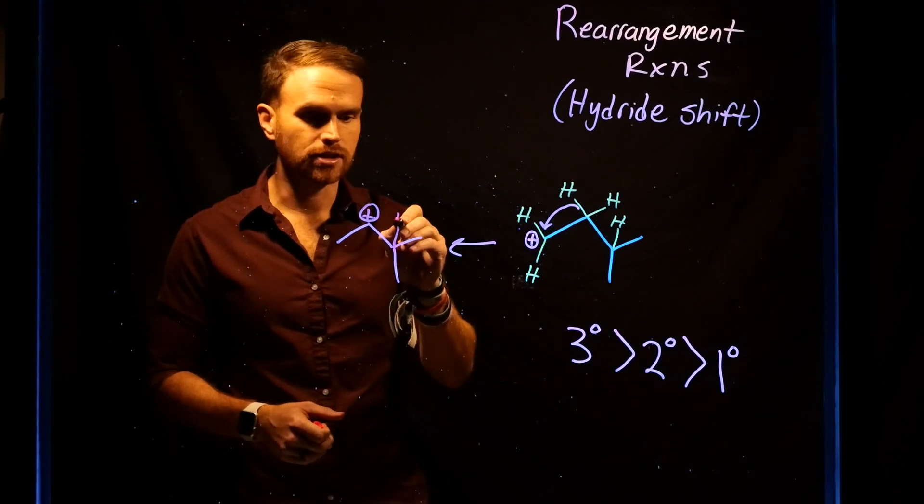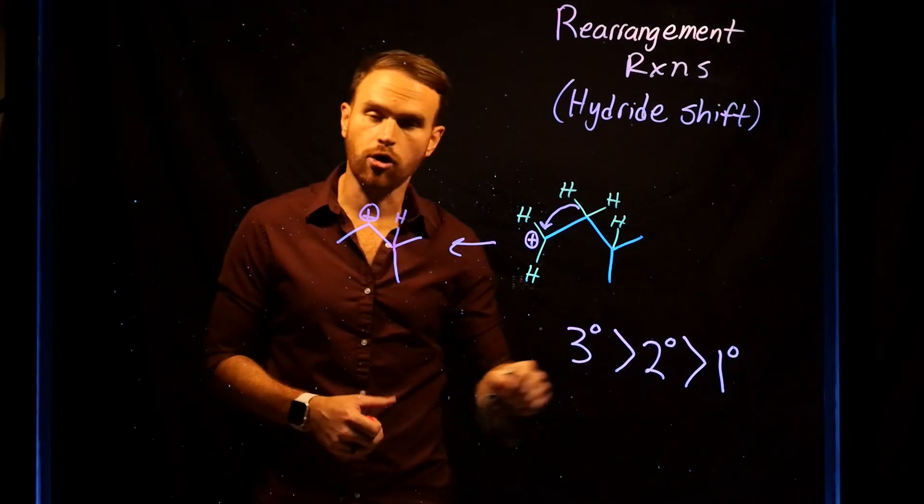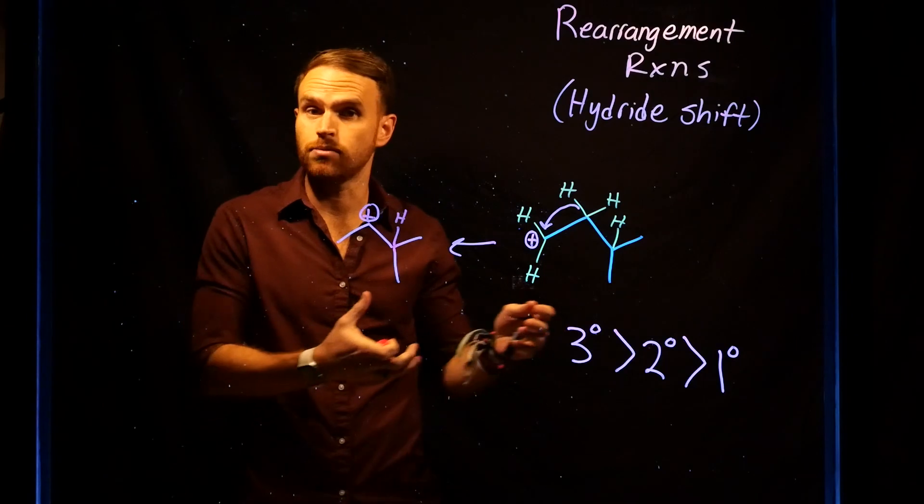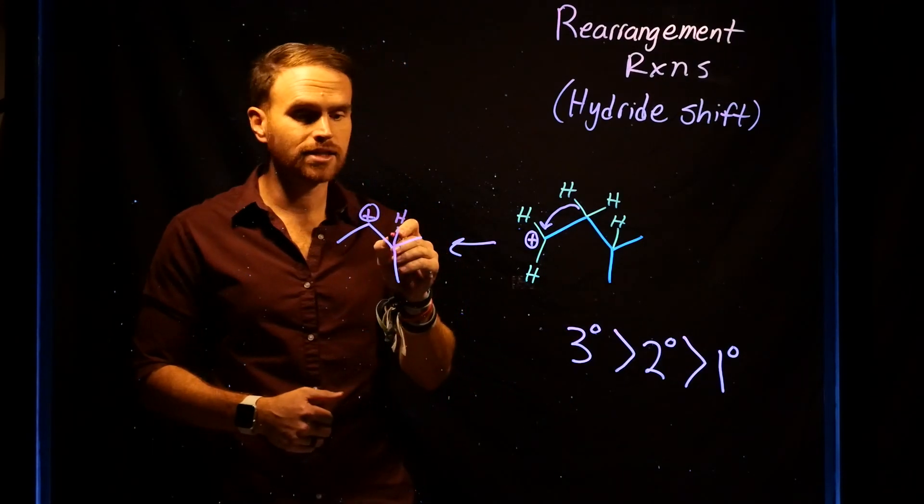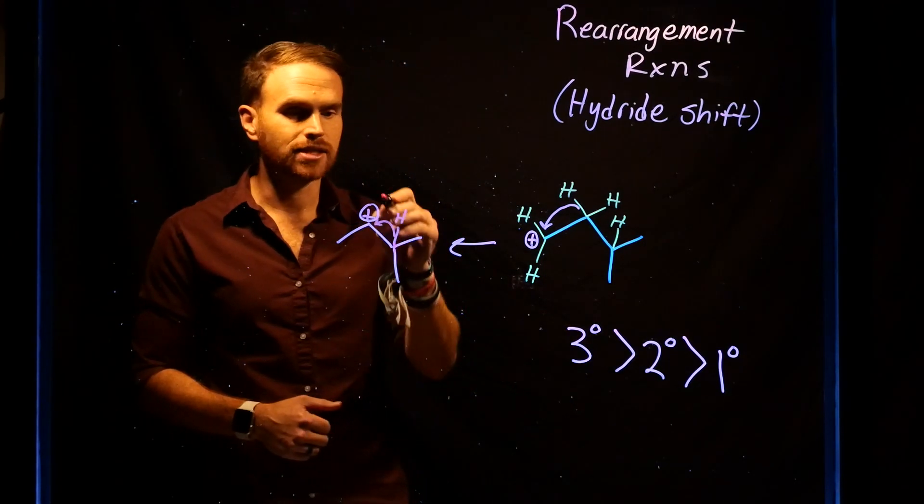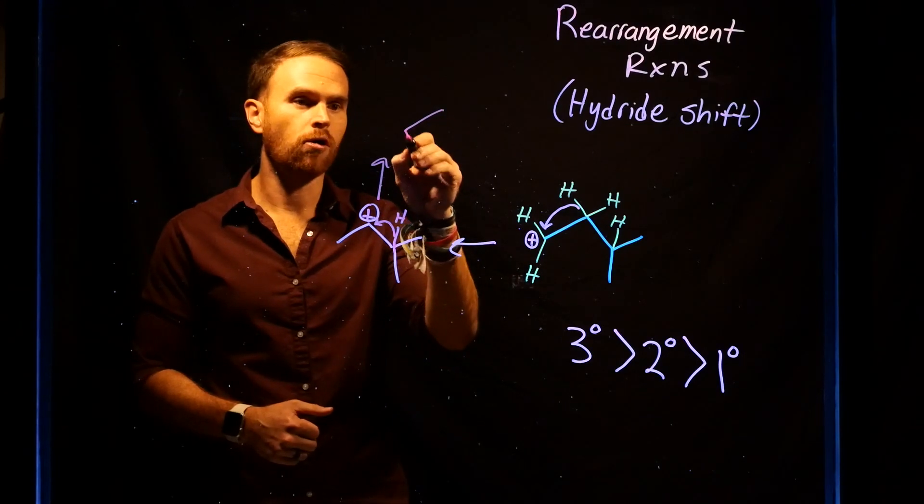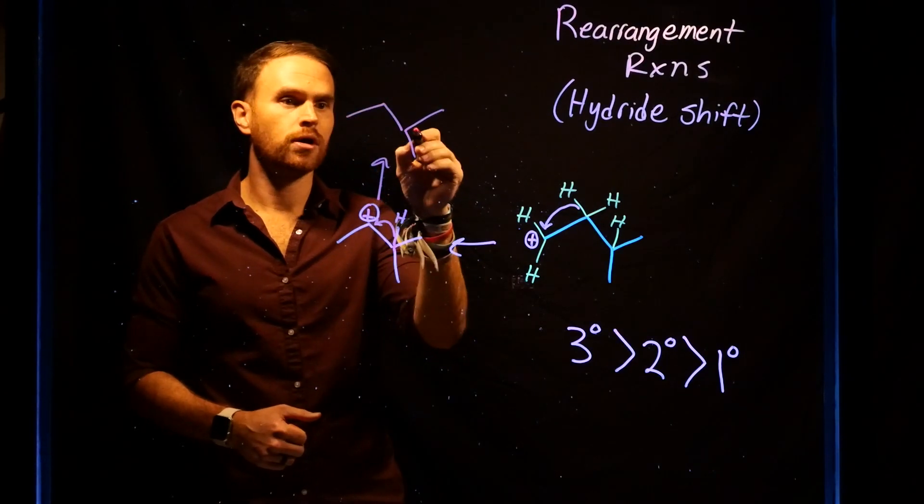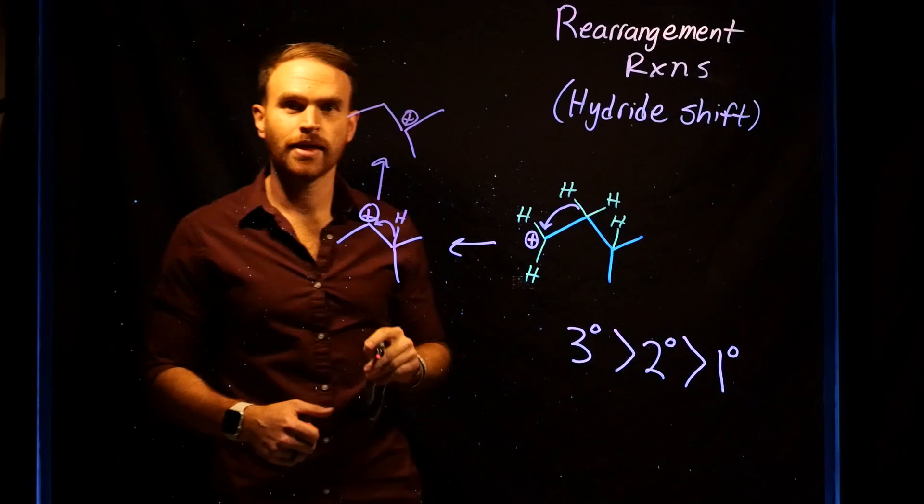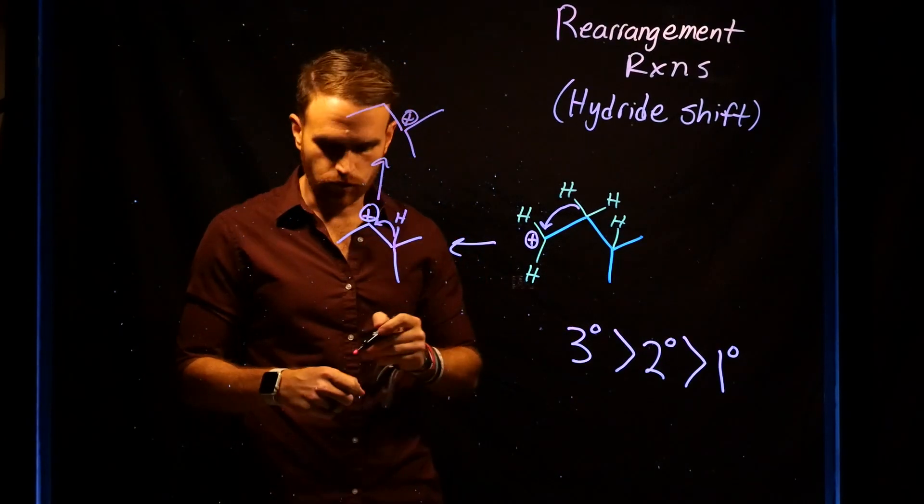Additionally, since we know that tertiary carbocations are more stable than secondary carbocations, this can continue to happen until you generate what is overall a more stable carbocation species. And this actually occurs in certain reactions.